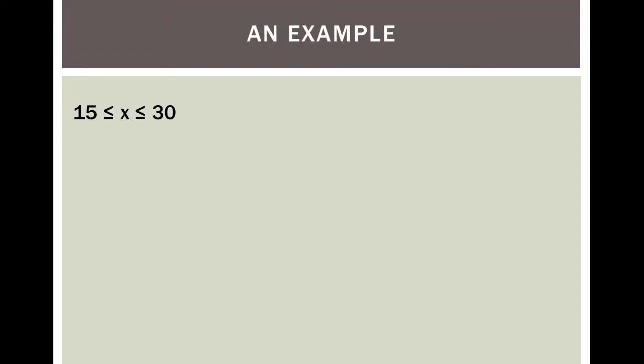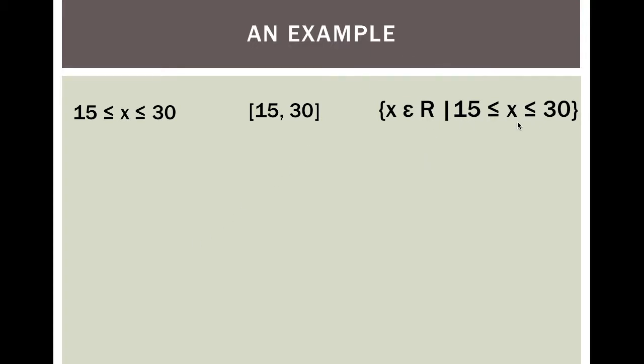Here are some examples. I have 15 less than or equal to X less than or equal to 30. In interval notation, it would be [15, 30] with both hugging square brackets. To write this in set builder, I would say: X is in the set of real numbers such that 15 is less than or equal to X, which is less than or equal to 30.